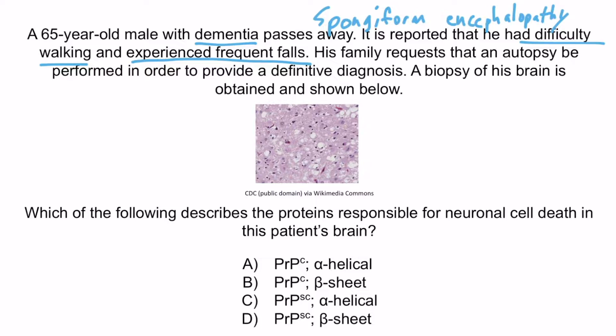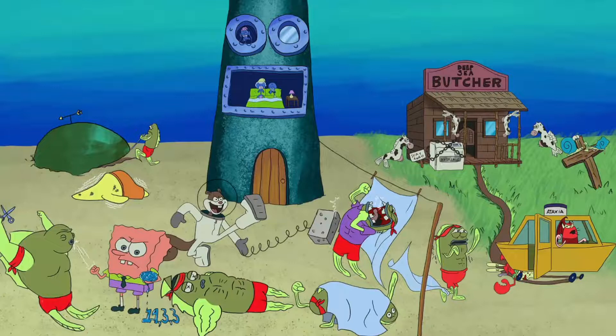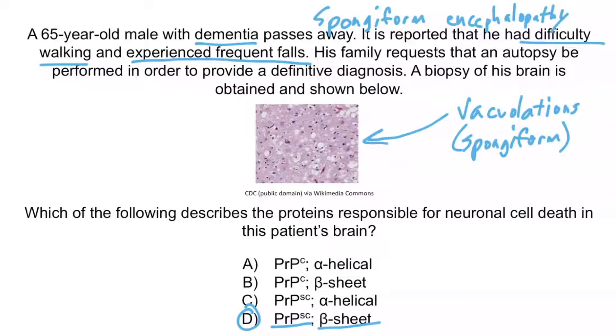With prion diseases in mind, the correct answer is choice D: PRPSC proteins in the beta sheet formation. Remember that alpha helical prions get converted to the beta-pleated sheet formation, which are pathological — these are termed PRPSC, and S stands for stupid. Choice A is wrong because PRPC describes the normal prion in the alpha helical configuration. Choice B is wrong because PRPC is the normal prion, even though the beta sheet formation is what we'd expect from the pathological form. Choice C is wrong because the alpha helical formation is not what we'd expect from the pathologic prion. So the correct answer is PRPSC in the beta sheet configuration.